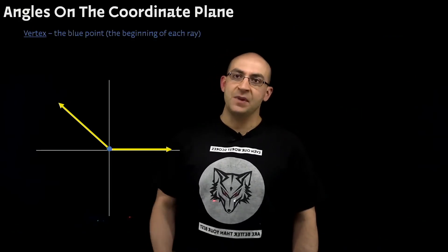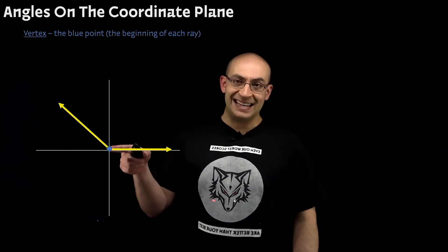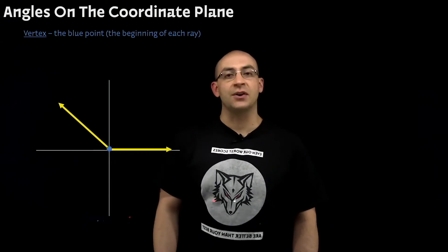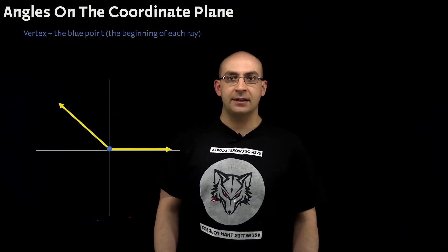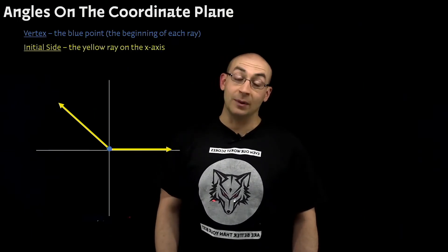Let's start with some vocabulary. The blue point, which is at the center of these two rays, is called a vertex. But because it's singular, it's just going to be the vertex. It's the blue point that is in the center of where both rays begin.